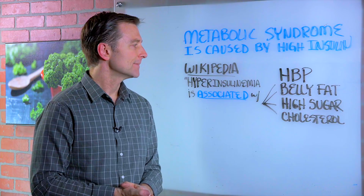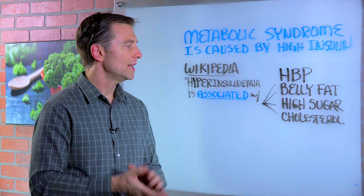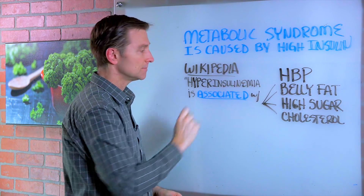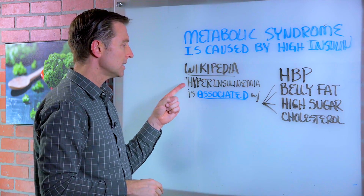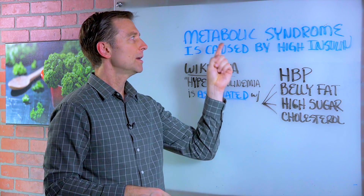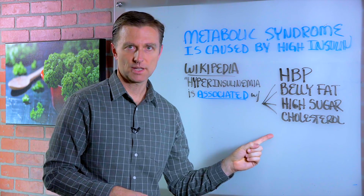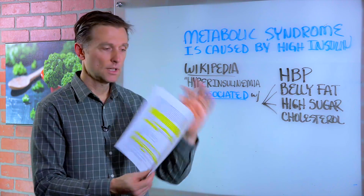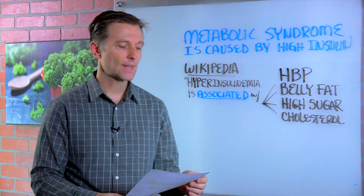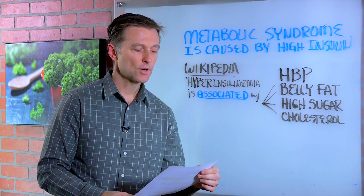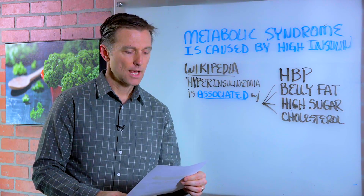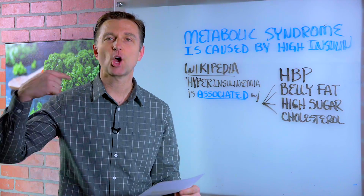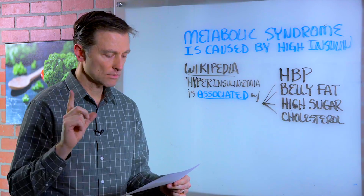It's so interesting because if you look up something called hyperinsulinemia — high insulin — it'll say that this condition is associated with metabolic syndrome and these symptoms. But really, it causes it. I'm going to show you something out of Wikipedia that talks about high insulin, hyperinsulinemia. It says it's associated with hypertension — I love that. It's not associated; it's causing it. I'll explain it shortly.